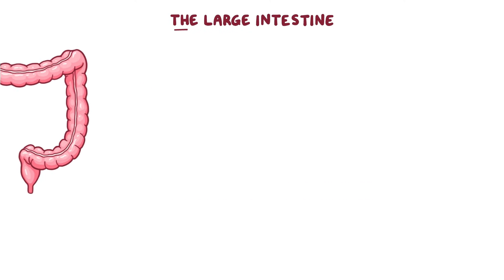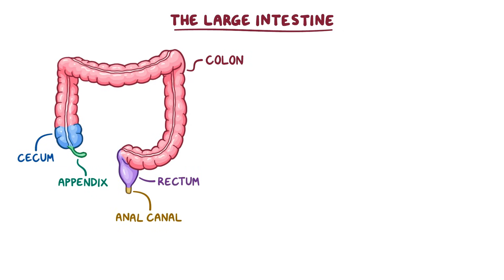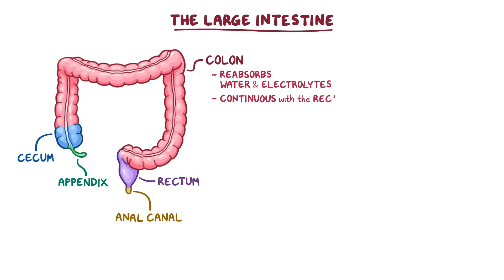The large intestine consists of the appendix, cecum, colon, rectum, and anal canal. The colon is mainly responsible for reabsorbing water and electrolytes from the feces within its lumen. The colon is continuous with the rectum, where the feces is stored before defecation.